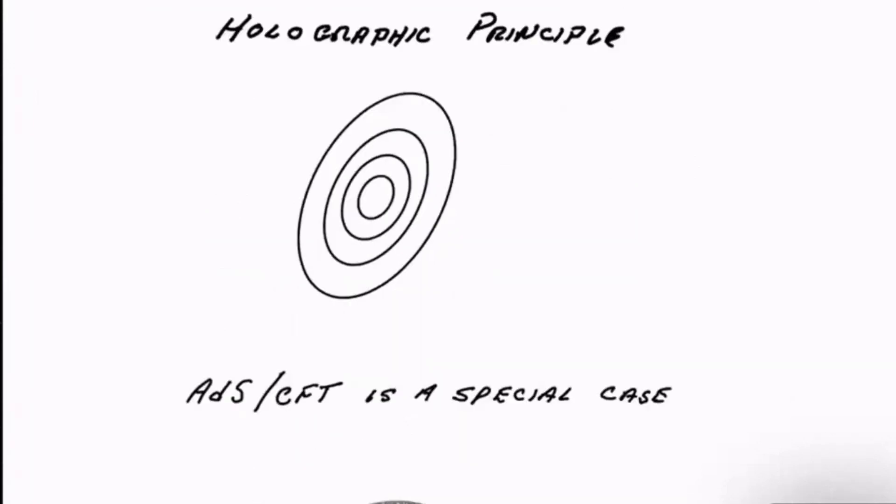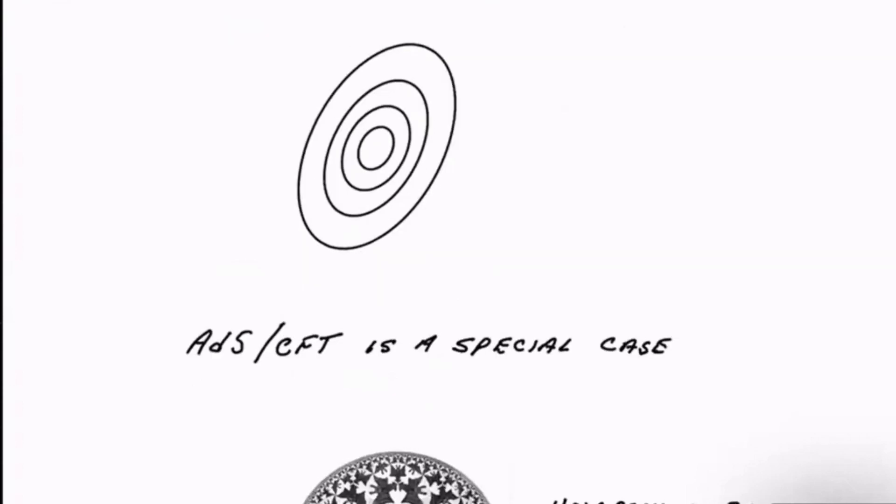The holographic principle says, we can put it this way: if we take a nested series of spatial regions, each bounded by its own boundary, with some restrictions, some convexity restrictions which I won't go into, then the boundary of each region has enough degrees of freedom in the holographic sense to describe everything within that region, and not enough to describe anything outside that region.